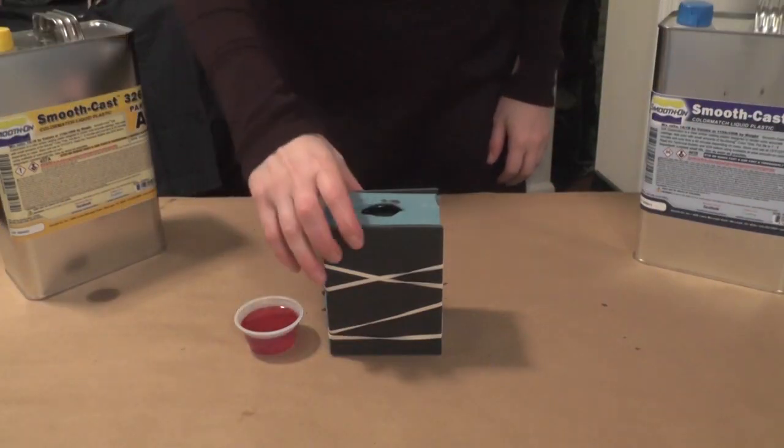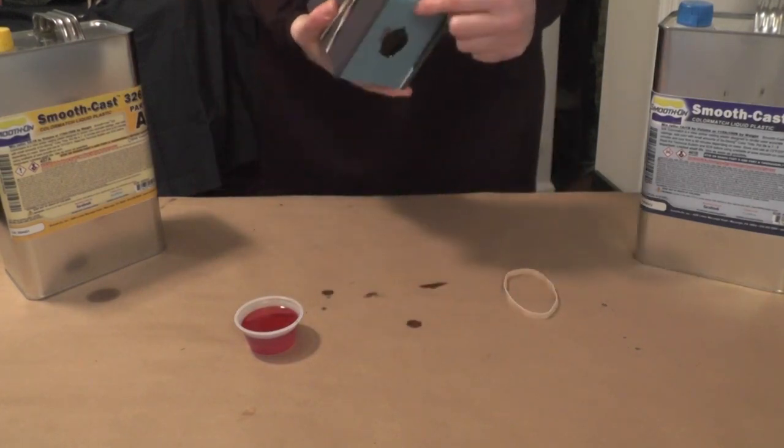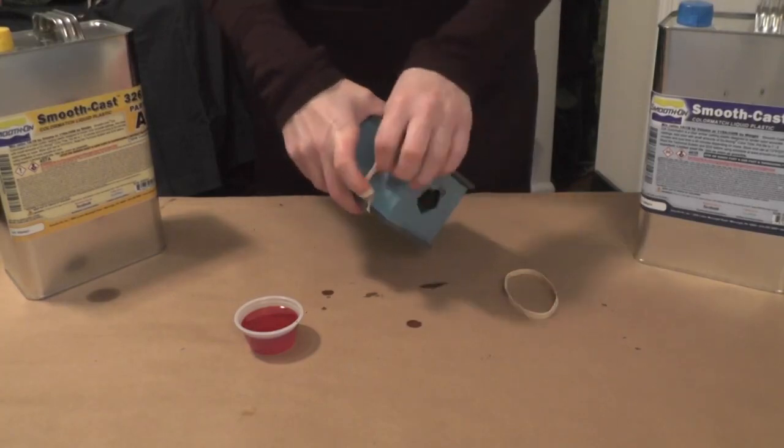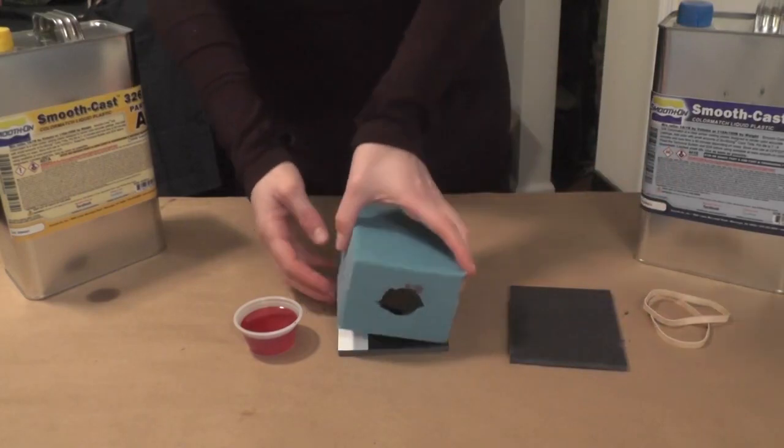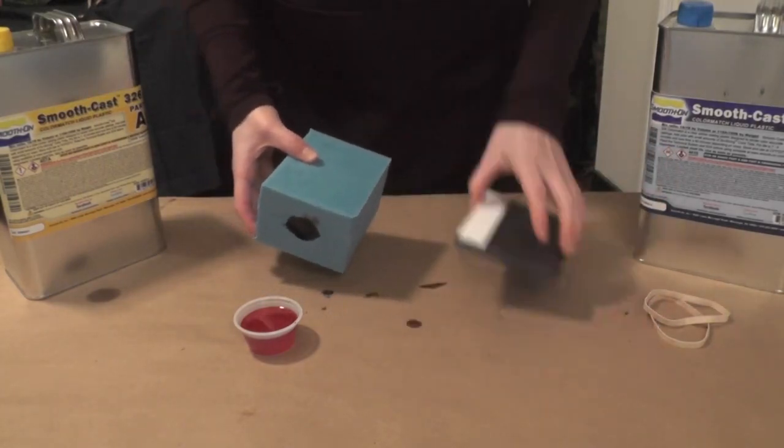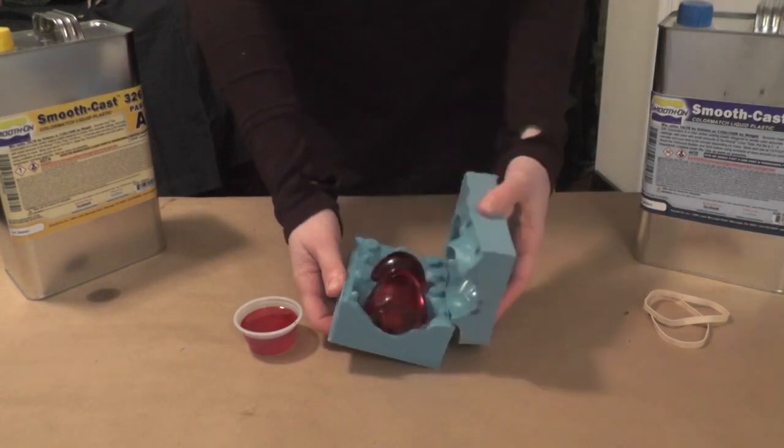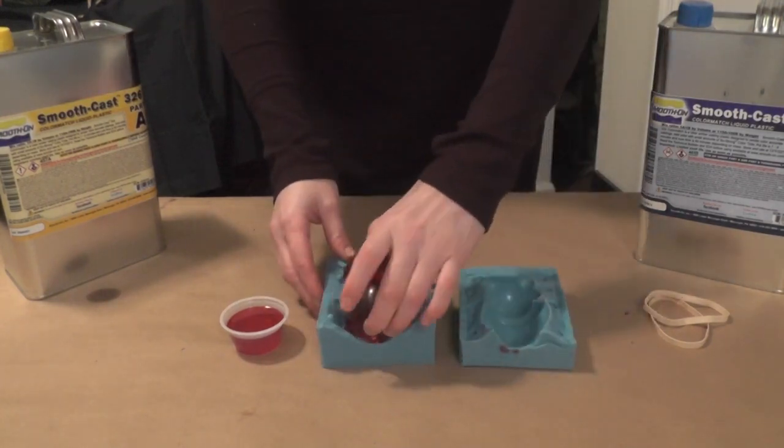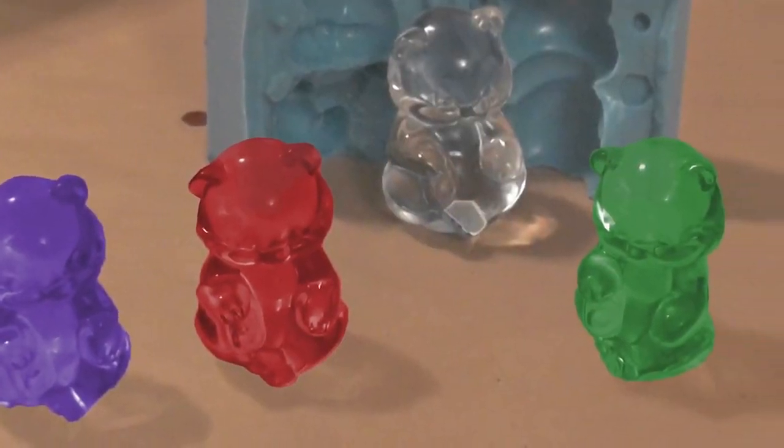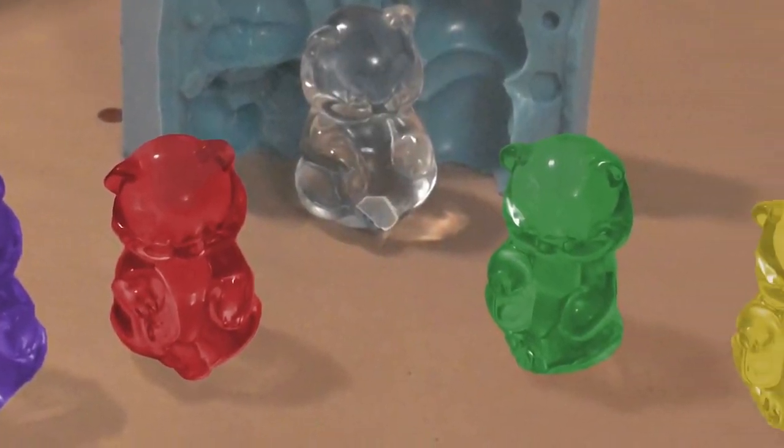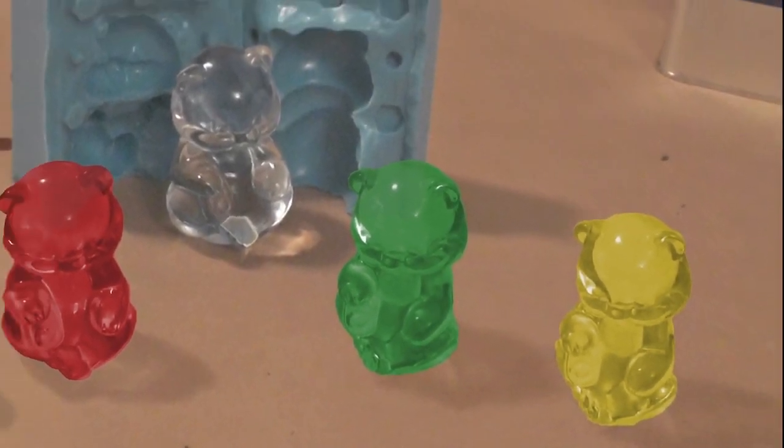An hour later I can see the material in my cup is cured so I know that I'm safe to demold my casting. The mold easily splits apart and I can pull out my first casting and it was a success. Thank you for watching my process on how to make a two-part mold in castings and I hope it helps you in your own projects going forward. Good luck!